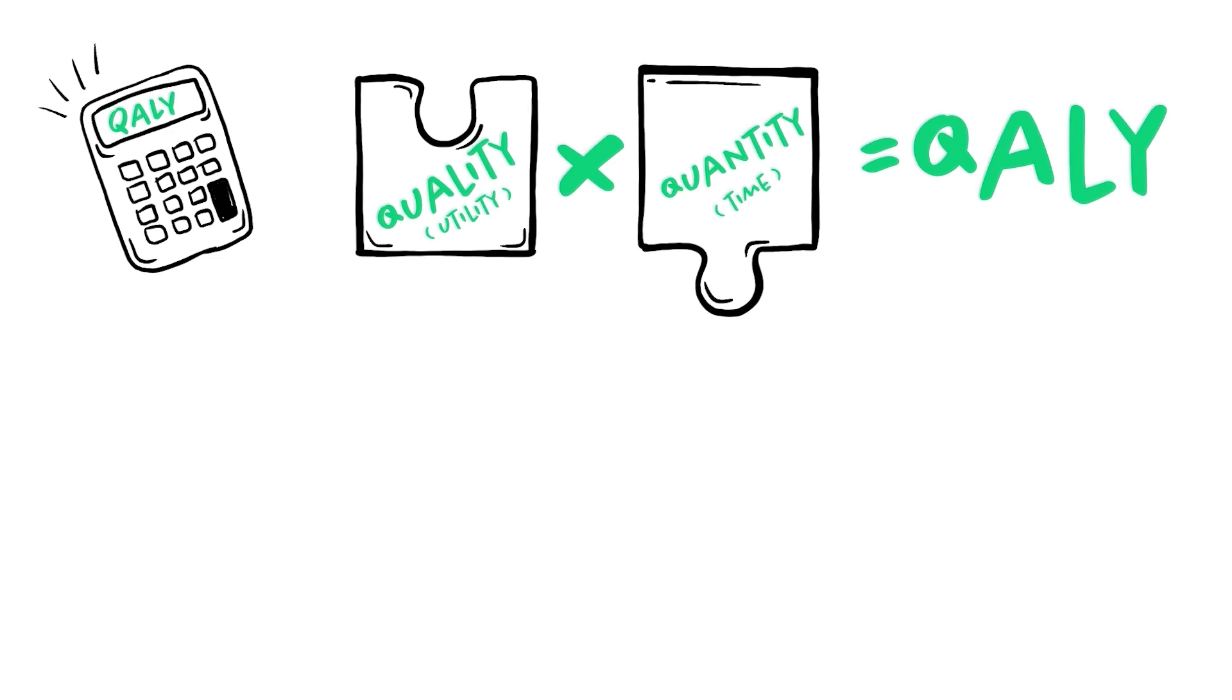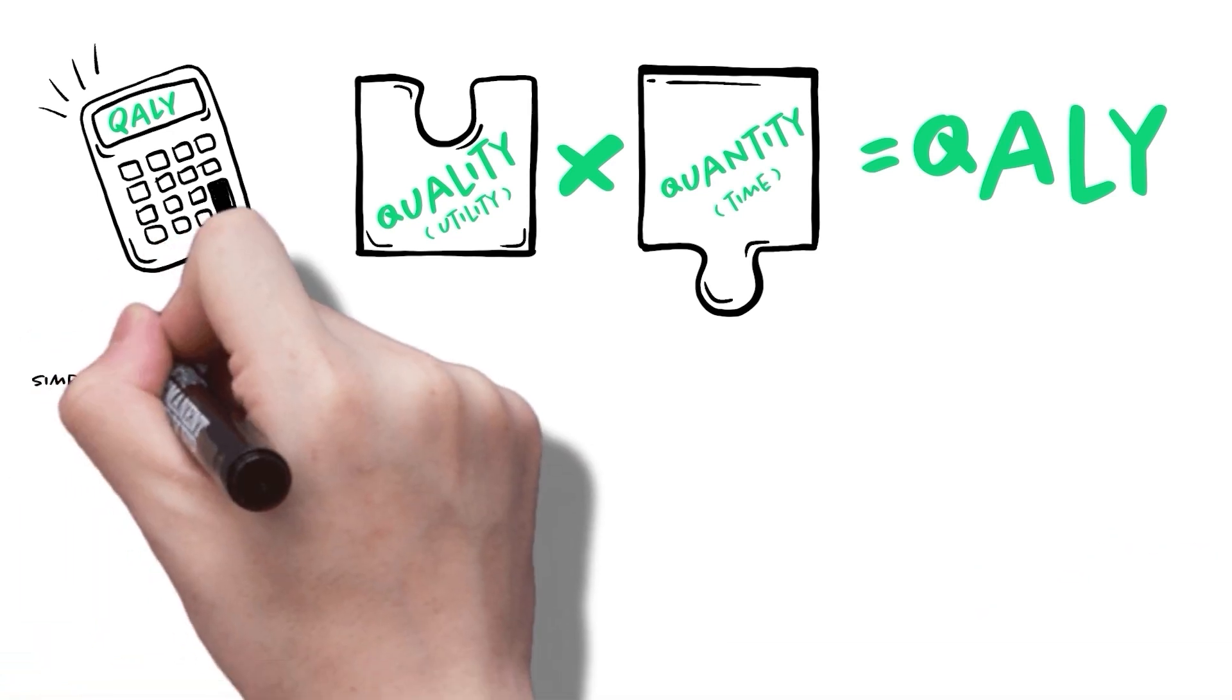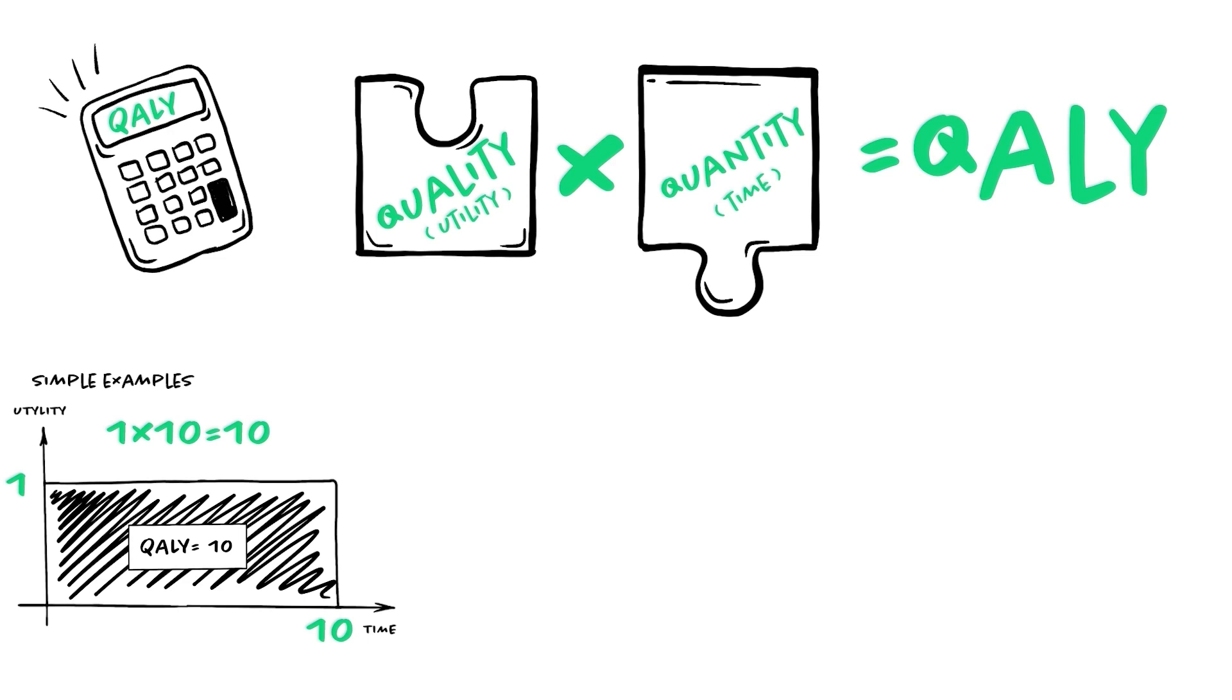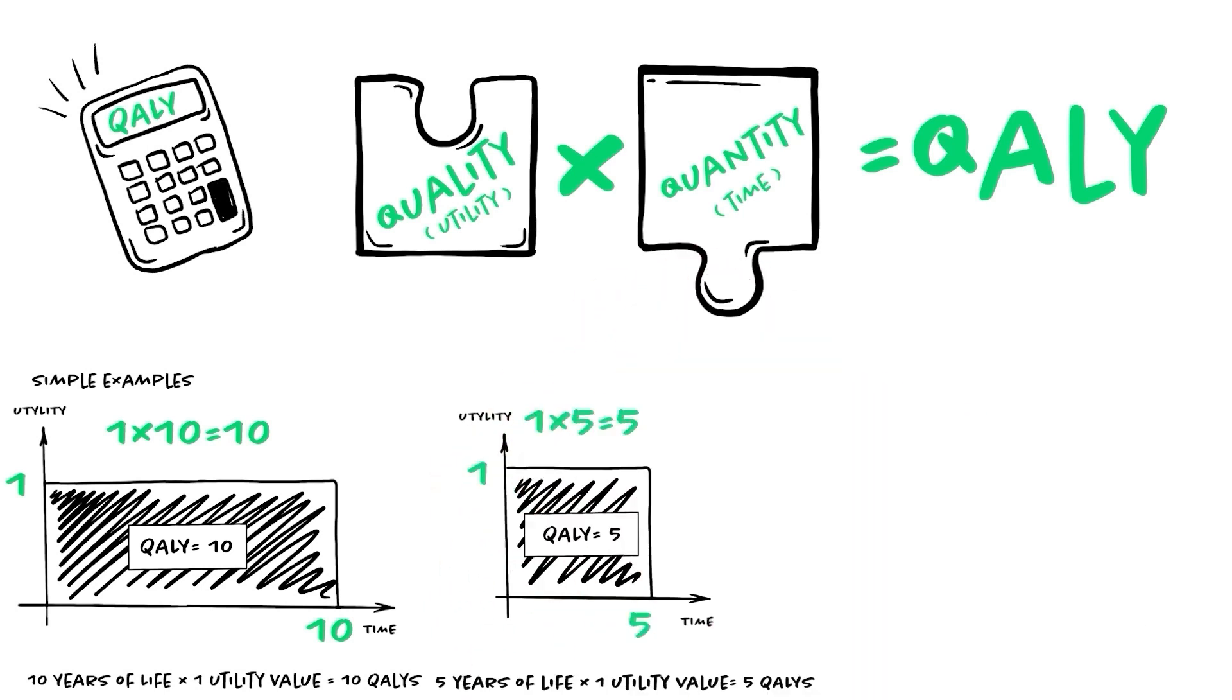Okay, this seems easy. Can we try on some examples? Sure. Example one, if a person lives in perfect health for 10 years, that person accumulates 10 QALYs, 10 years of life, times a utility value of 1, equals 10 QALYs. Second example, if a person lives in perfect health only 5 years, that person accumulates 5 QALYs.